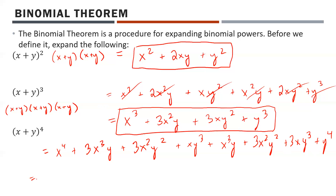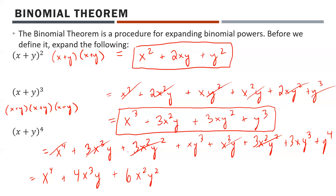Let's combine like terms in decreasing powers of x. x⁴ stands alone. The x³ terms: x³y and x³y combine to give plus 4x³y. The x² terms: 3x²y² and 3x²y² combine to give plus 6x²y². Then 4xy³, and finally plus y⁴. So our answer is x⁴ plus 4x³y plus 6x²y² plus 4xy³ plus y⁴.